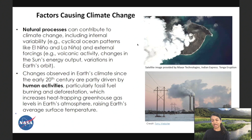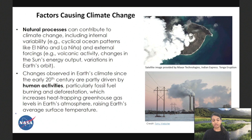Natural variability has always been a part of Earth's climate system — Earth has gone through periods of cooling and warming. Natural processes that can contribute to climate change include internal variability such as ocean patterns like El Niño and La Niña, and external forcings such as volcanic activity, changes in the Sun's energy output, and variations in Earth's orbit. However, these natural causes are too small and too slow to explain the rapid warming we have seen since the early 20th century, which is partly driven by human activities, particularly fossil fuel burning and deforestation.